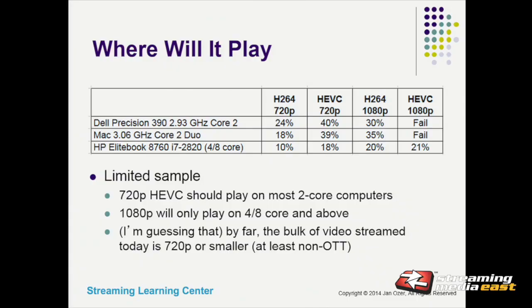Even a 25% reduction — I'm sure if ESPN or CNN could cut their bandwidth costs by 25% that would be a huge deal. So I'm not denigrating a 25% reduction in bandwidth, but it's not 50% yet. The second question is: where will HEVC play? I ran tests on low-end machines in my office — I've got a 48-core HP Z820 workstation where HEVC plays just fine, but there aren't that many of them out there.